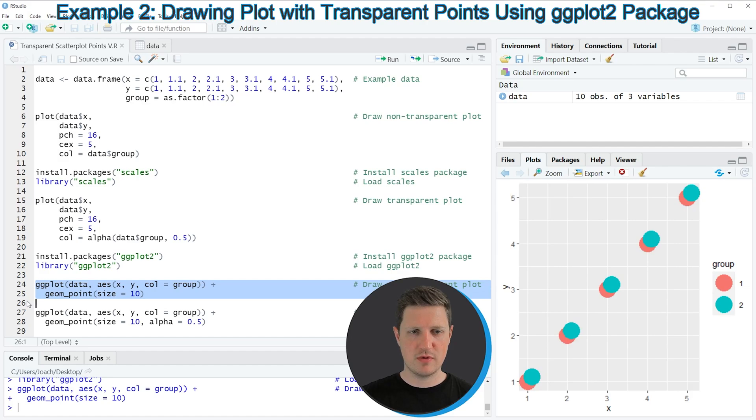So if you run these lines of code, you can see at the bottom right of RStudio that a new plot has been created which is showing the same data as our previous plot. However, this time the plot is displayed in this typical ggplot2 style that you might already know.